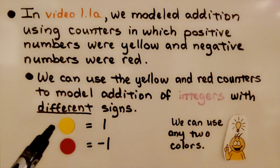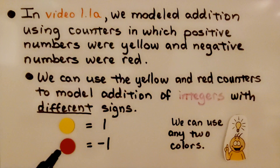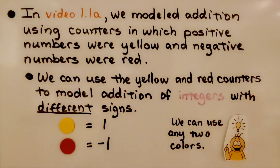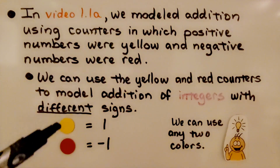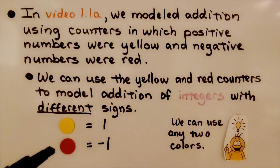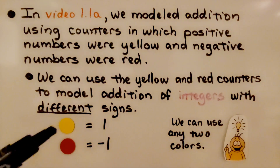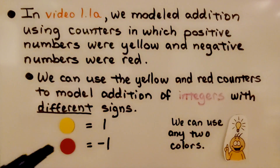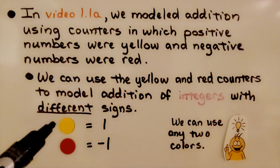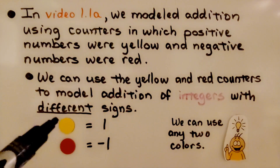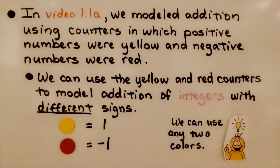A yellow counter represents a positive 1 and a red counter represents a negative 1. We can use any two colors — green and red, blue and red, or green and blue — it doesn't matter as long as you remember which counter represents positive and which counter represents negative.